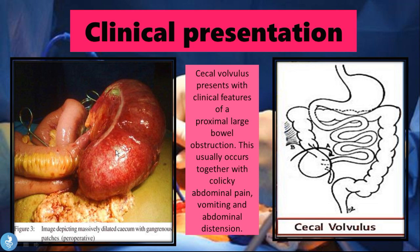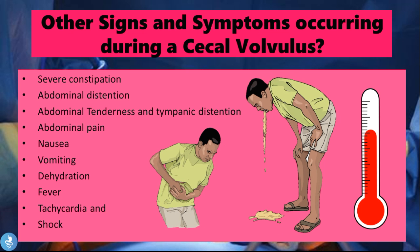These patients will have swollen bowels, vomiting, abdominal distension, and nausea. The image on the right depicts a massively dilated cecum with gangrenous patches. When parts of the bowel become twisted, their blood supply is also cut off, leading to bowel ischemia. Long-standing ischemia leads to gangrene — quite an alarming sign. Other signs and symptoms include severe constipation, abdominal tenderness, tympanic distension, abdominal pain, nausea, and vomiting. Because of the nausea and vomiting, we'll also see dehydration and electrolyte imbalances, as well as fever, tachycardia, and the development of shock.